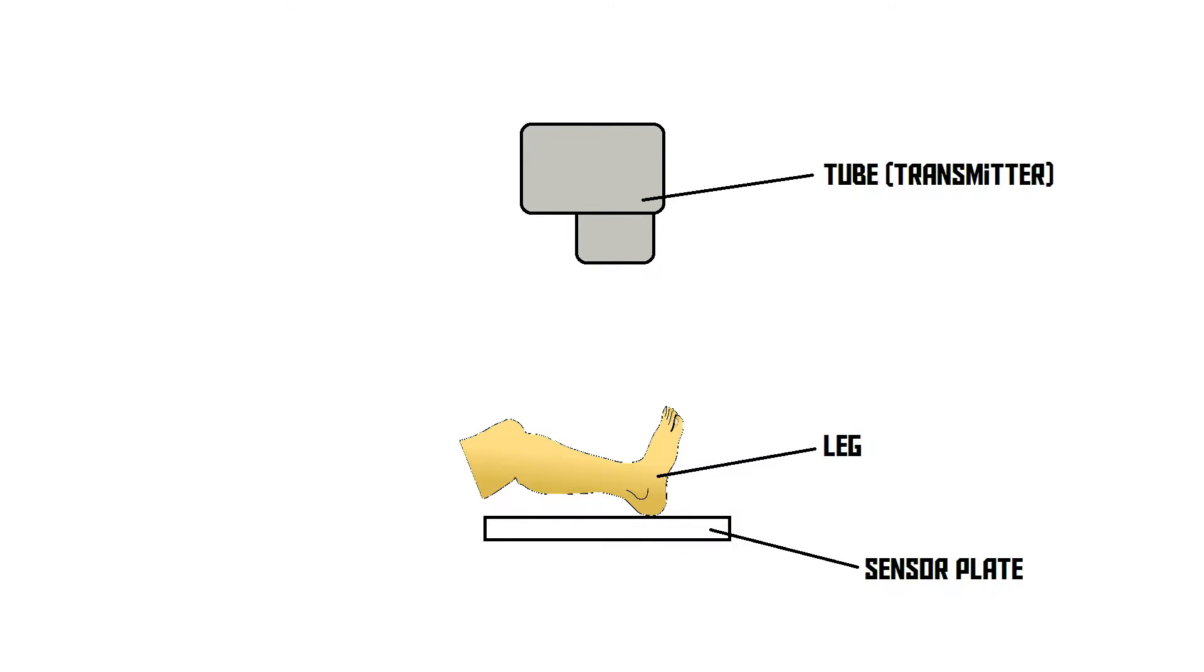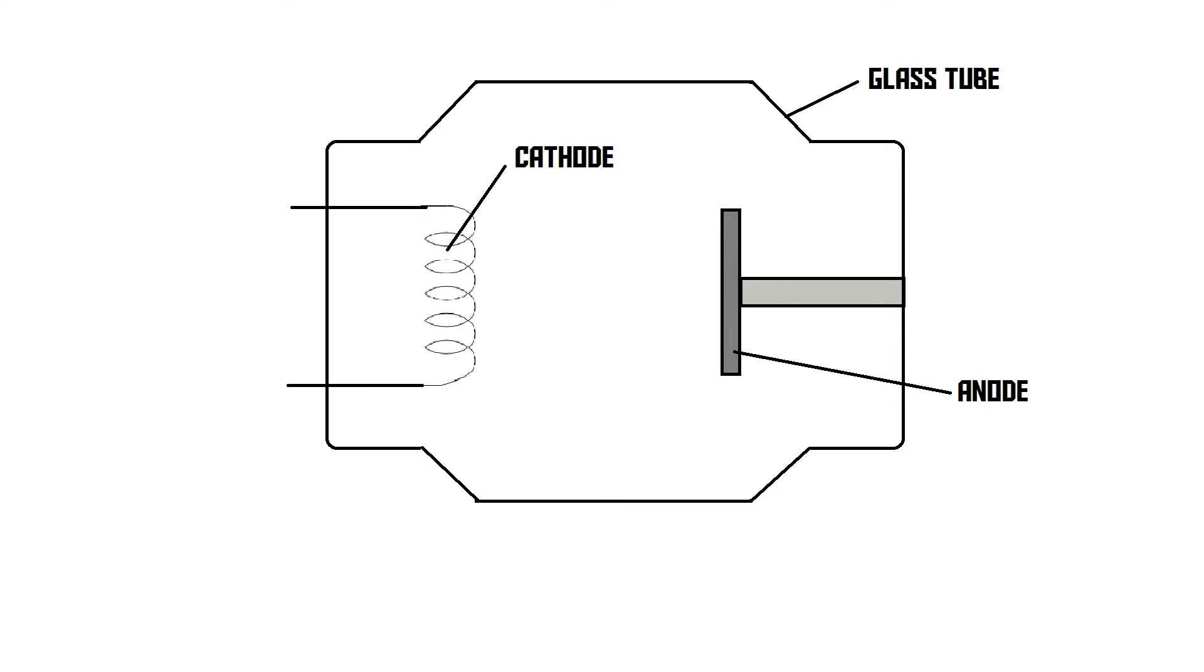An X-ray setup relies on two components, a tube and a sensor. The tube is a device that produces the X-rays and sends them through the body of the patient. This tube is made out of glass. Inside it, there's a vacuum. This is required for producing X-rays.